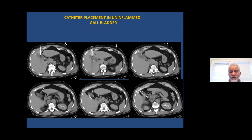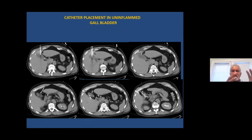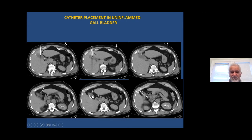Another important point: if the gallbladder is not diseased and is normal, it will be very difficult to pass the catheter into a normal, floppy, thin-walled gallbladder because it is not distended enough to allow the catheter to pass through — unless passing through the liver parenchyma where a small portion of the gallbladder is extraperitoneal. The catheter will often pass across to the other side. Trying to drain a normal gallbladder is very difficult and one should not attempt it.